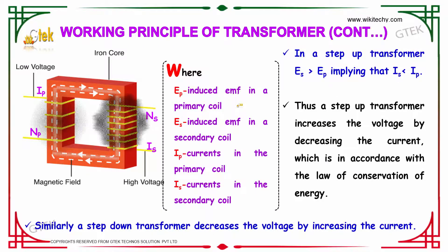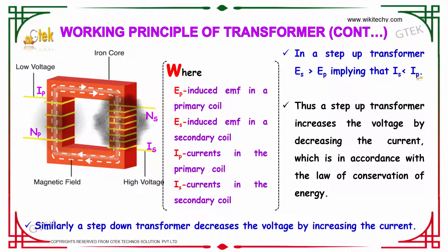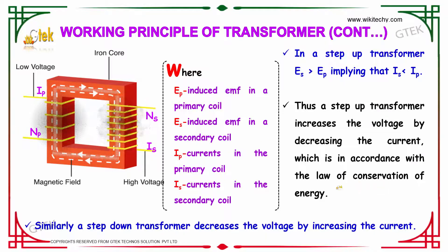In a step-up transformer, ES should be greater than EP, implying that IS is less than IP. So, the step-up transformer increases the voltage by decreasing the current, which is in accordance with the law of conservation of energy. Similarly, a step-down transformer decreases the voltage by increasing the current.